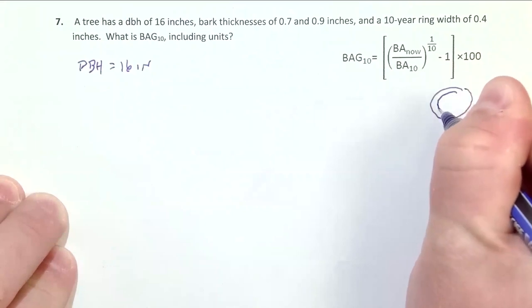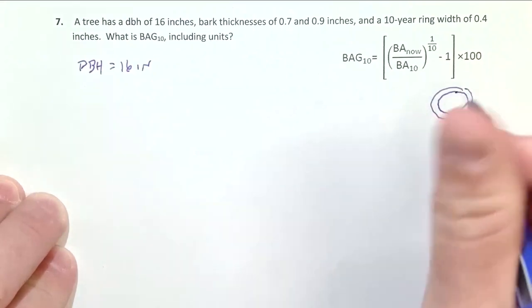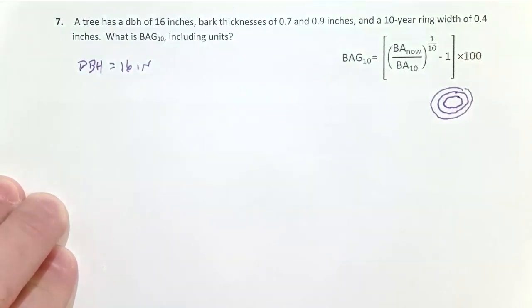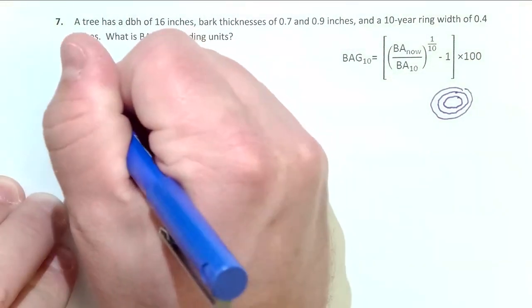if we measure inside the bark, we can get diameter inside the bark now. And then if we subtract 10 years of growth rates from an increment core, we can get diameter inside the bark 10 years ago. So I need to subtract the bark thickness off to get diameter inside the bark now.